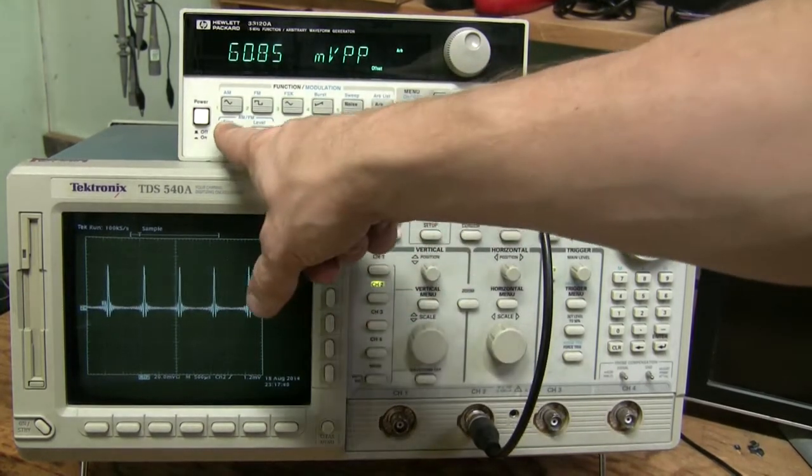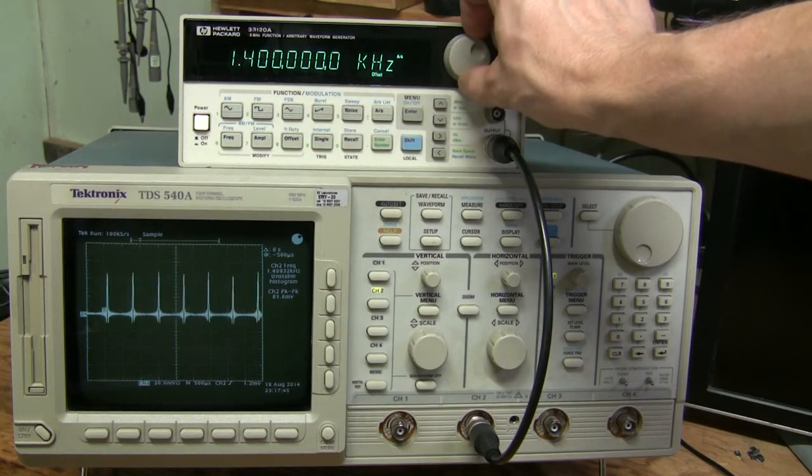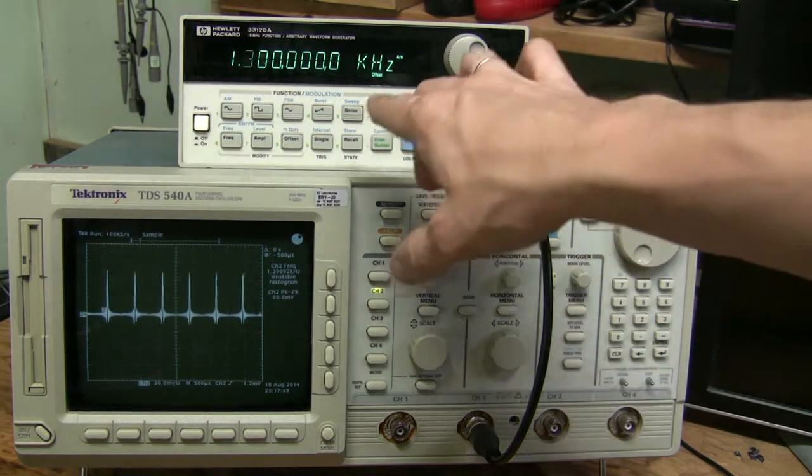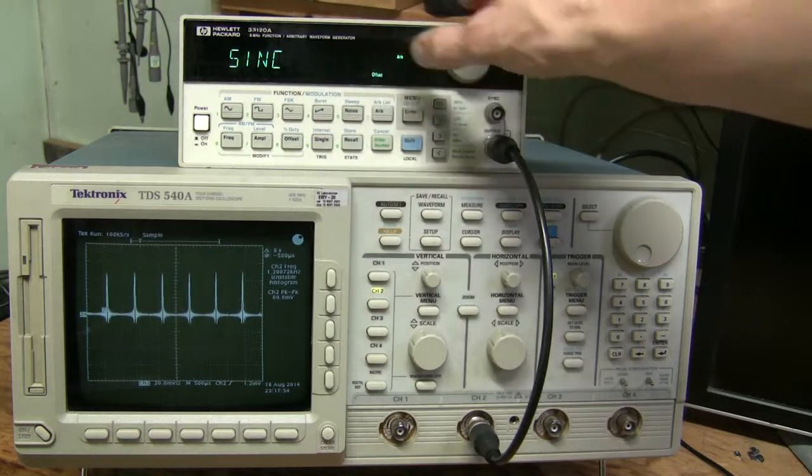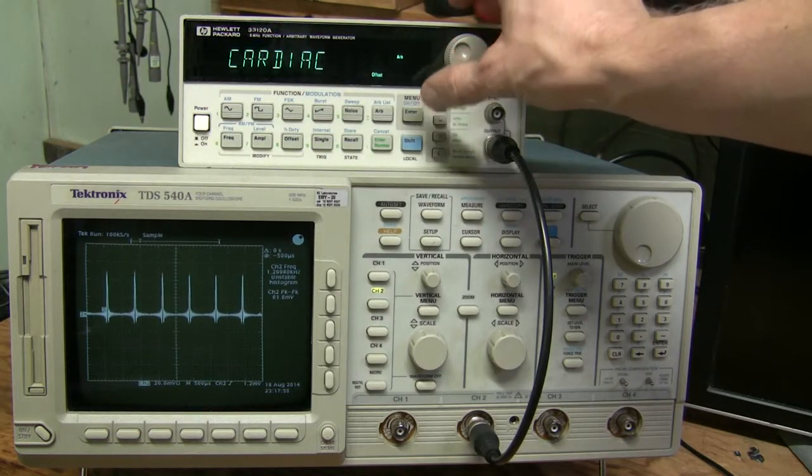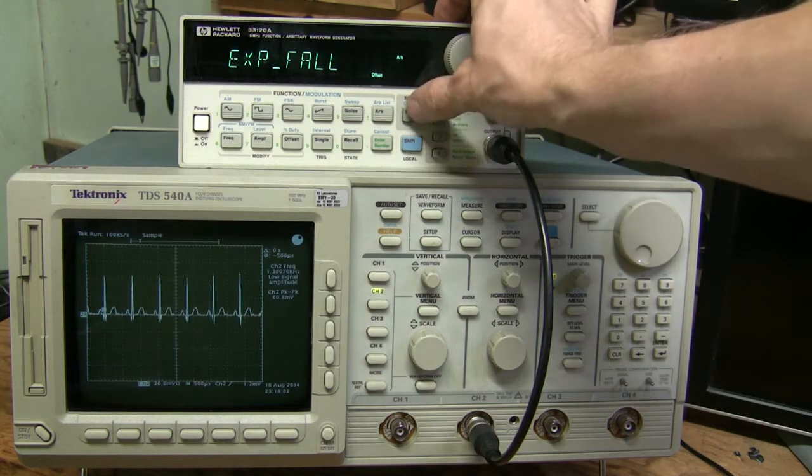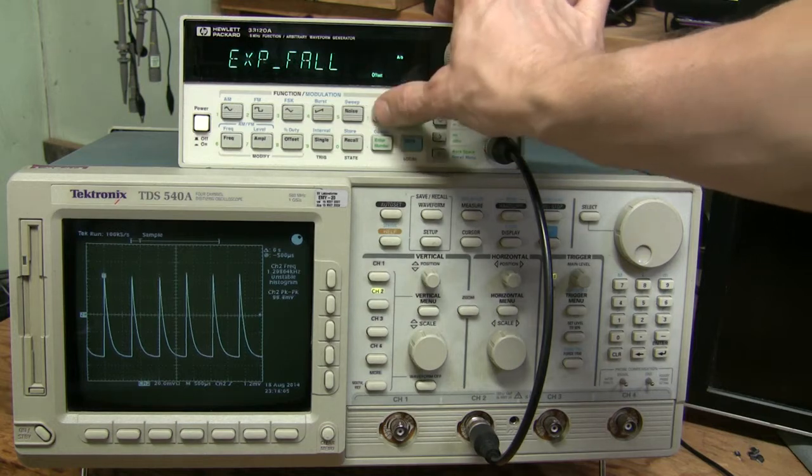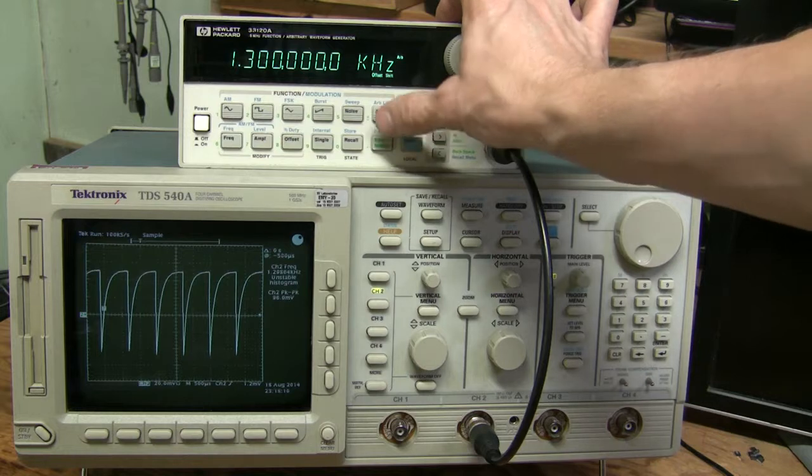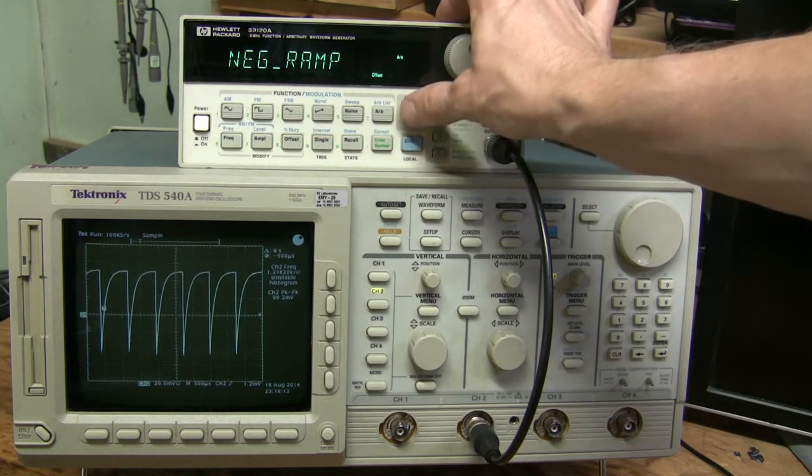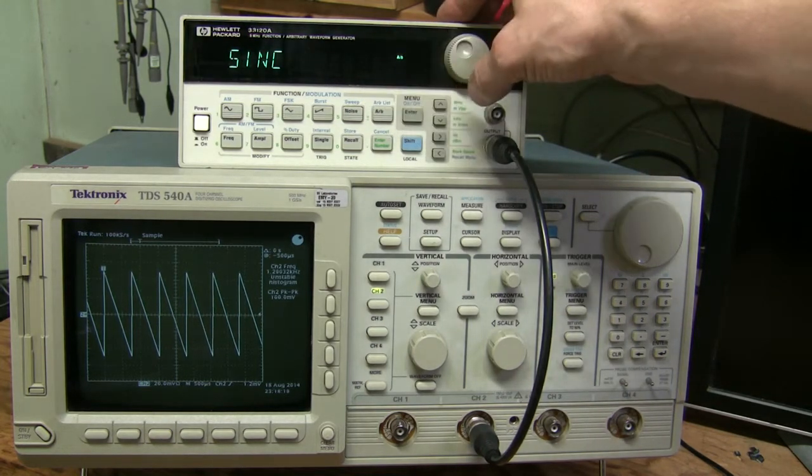Then arbitrary. Here is the frequency is back. And here is the list of this arbitrary things - this is the first one, sync and cardiac. Then exponential fall, exponential rise, negative ramp, and that's it we are back to sync.